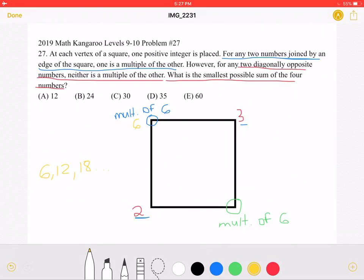let's say we put a 6 here, it would be wrong because the number over here is also a multiple of 6. And again, two diagonally opposite numbers, neither is a multiple of the other.